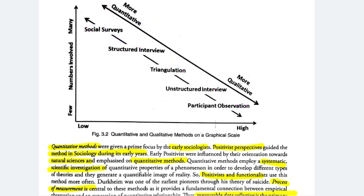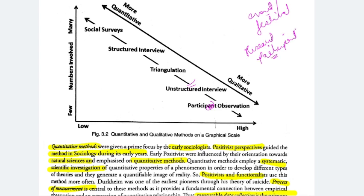Then you have triangulation. Unstructured interviews have open-ended questions and you are free to answer anything. Participant observation is when you are studying an event, a tribe, or a festival — you are also a researcher, but as a participant you are observing all the things. You would be able to read between the lines and see the hidden aspects or hidden meaning of those festivals or events.